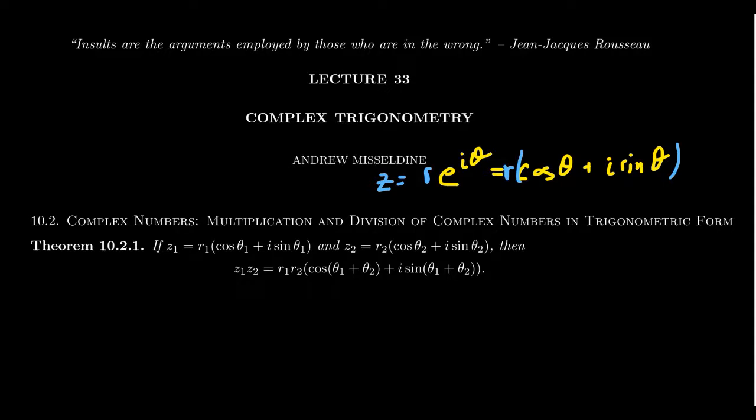So what's the point of the polar form? Well, when it comes to adding and subtracting complex numbers, there's really not a huge advantage. Actually, the polar form makes it a little bit more difficult to add and subtract these things. But when it comes to multiplication and division, the polar form is actually the superior method for doing this complex algebra. And I'd like to illustrate that to you here in lecture 33.